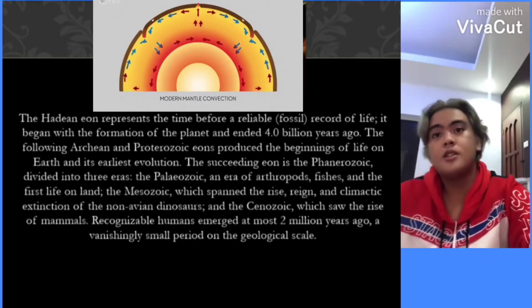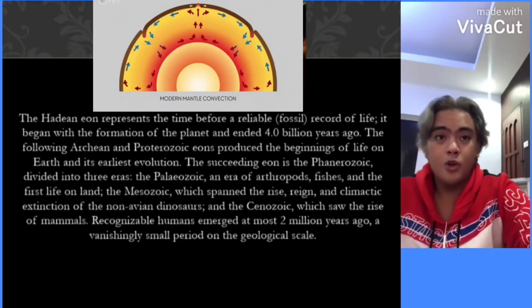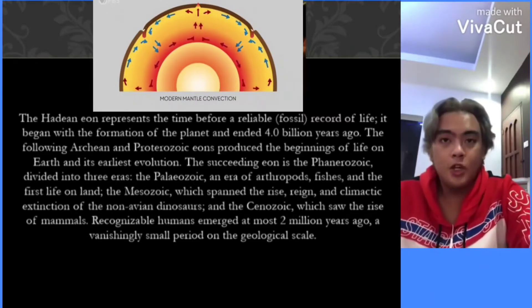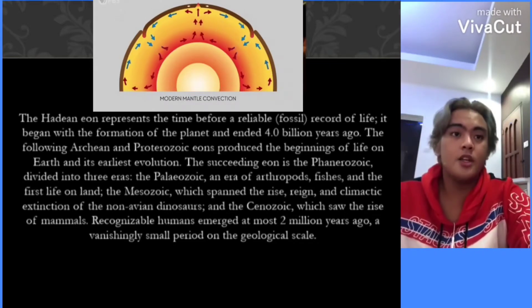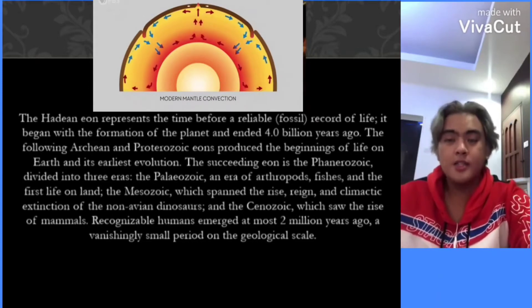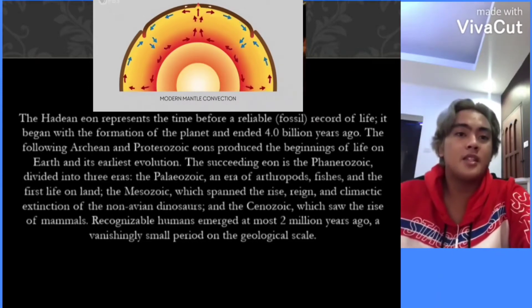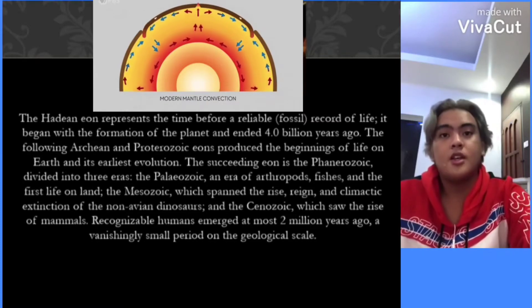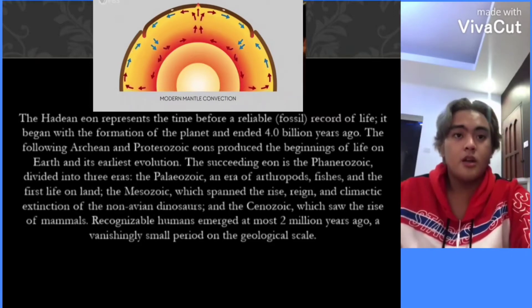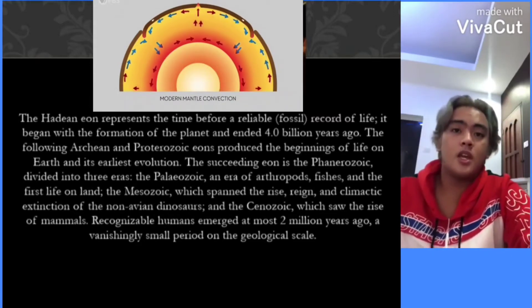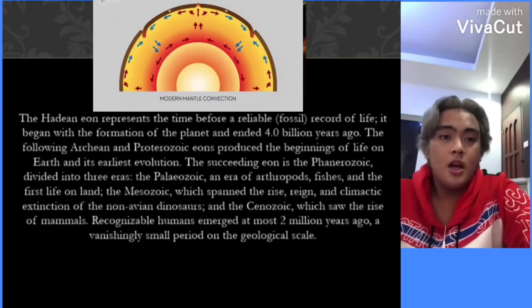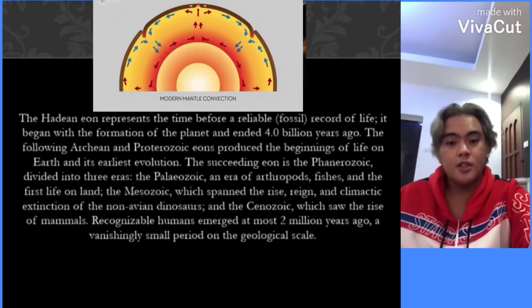The succeeding Aeon is the Phanerozoic, divided into three eras: the Paleozoic, an era of arthropods, fishes, and the first life on land; the Mesozoic, which spanned the rise, reign, and climactic extinction of the non-avian dinosaurs; and the Cenozoic, which saw the rise of mammals. Recognizable humans emerged at most 2 million years ago, a vanishingly small period on the geological scale.